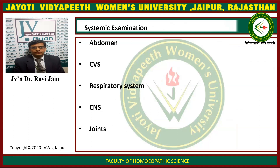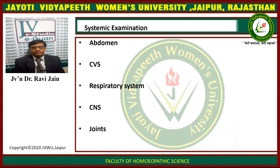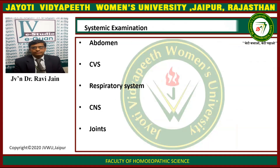In the systematic examination, every kind of examination that we have found will be covered: the abdominal examination, cardiovascular system, respiratory system, central nervous system, and joint examination. Many of the examinations have already been discussed, so we will discuss some of these in short.